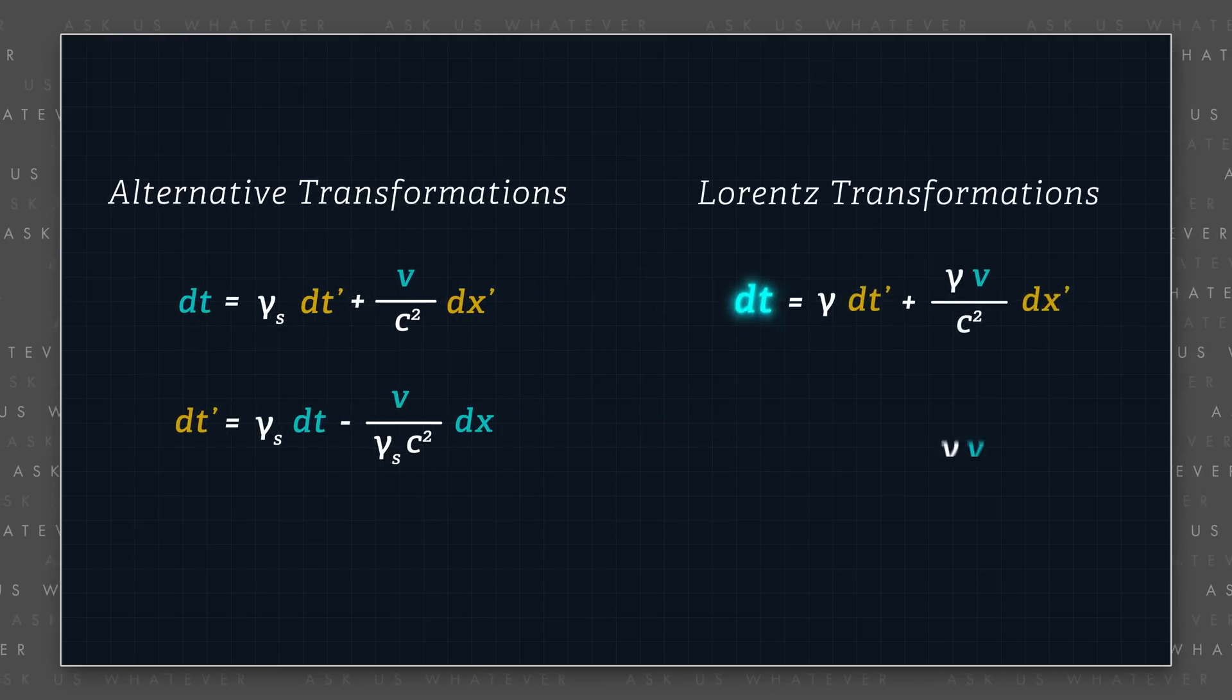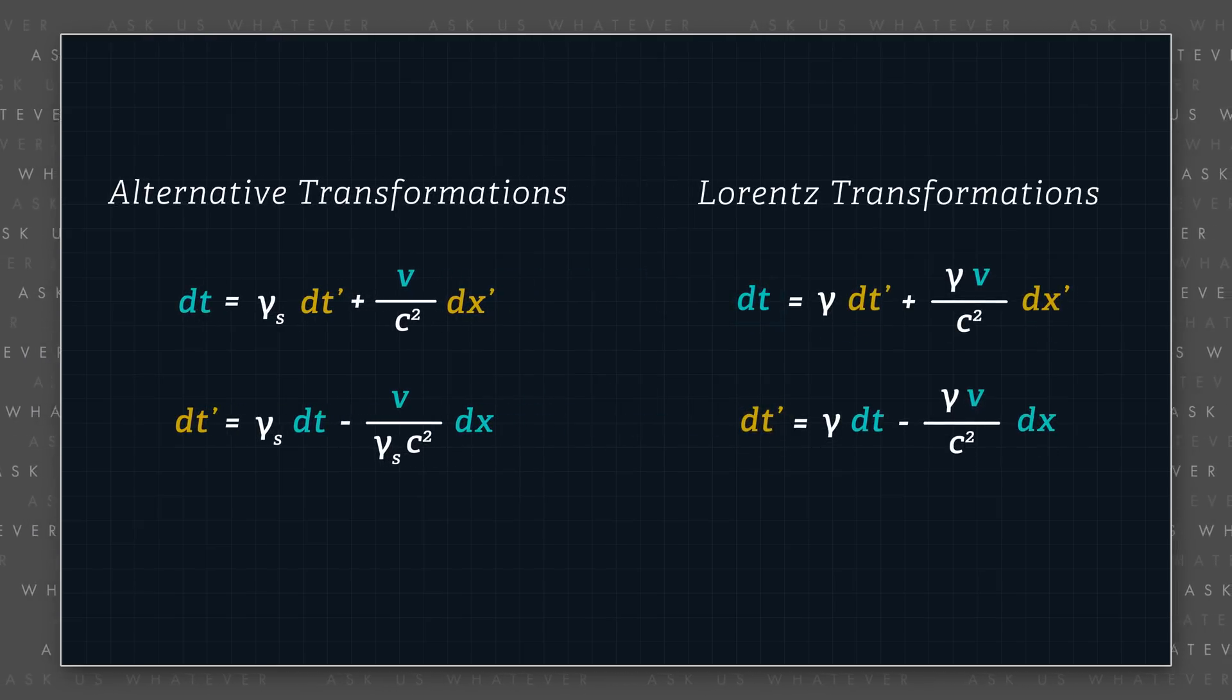This is because the alternative dt and dt prime transformations assume synchronized clocks in frame s prime, as do the dt and dt prime transformations in special relativity. We could write the dt and dt prime transformations assuming absolutely synchronized clocks in frame s prime, but that's for a future episode.